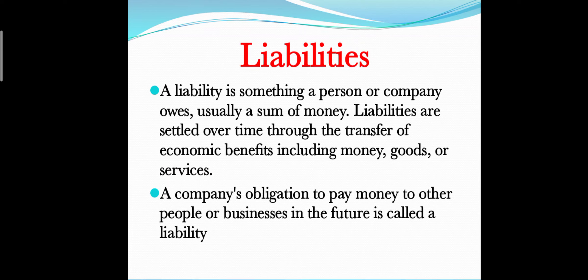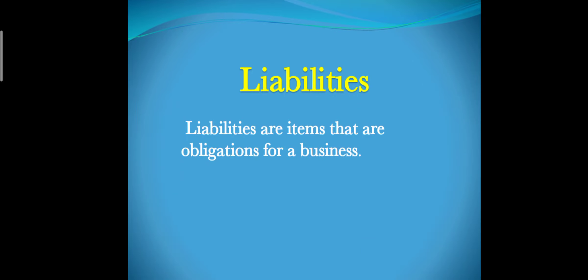یہ تھی definition of liability۔ Next definition: liabilities are items that are obligations for a business۔ Liabilities وہ items ہوتی ہیں جو business کے لیے obligations ہوتی ہیں، اور یہ long term بھی ہوتی ہیں اور short term بھی۔ Business میں pay کرنی ہوتی ہیں: long term liabilities، short term liabilities، contingent liabilities، outstanding liabilities، اور fixed liabilities — ان کو ہم one by one discuss کرتے ہیں۔